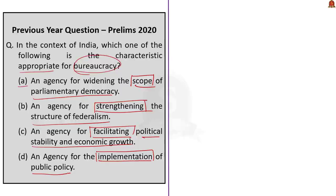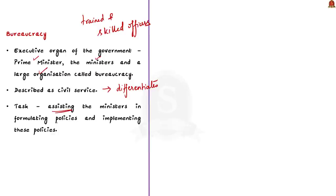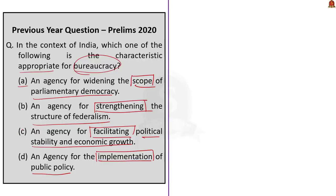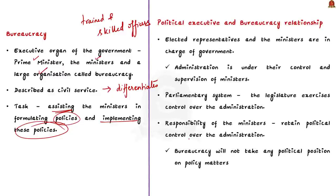The executive organ of the government includes the prime minister, the ministers, and a large organization called the bureaucracy or administrative machinery. To underline the difference between this administrative machinery and the military service, it is also described as civil services. The administrative machinery is staffed by trained and skilled officers who work as permanent employees of the government. They are assigned the task of assisting the ministers in formulating policies along with implementing these policies. In a democracy, elected representatives and ministers are in charge of government, whereas the administration is under the direct control of elected ministers. In the parliamentary system, the legislature also exercises control over the administration.